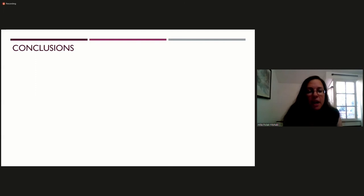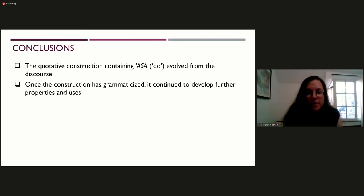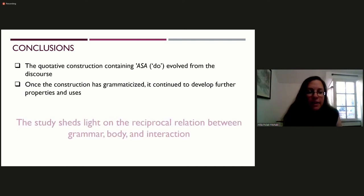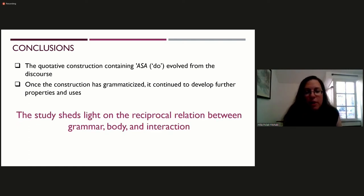To conclude, we have seen how the quotative construction containing Asa evolved from the discourse from the way speakers use their language in interaction. We have also seen that once the construction has grammaticized, it continued to develop further properties and uses. In this way, the study sheds light on the reciprocal relation between grammar, body and interaction. Thank you.